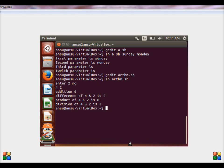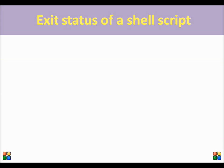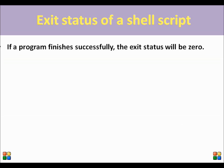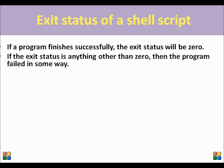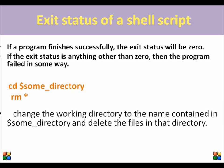Exit status in a shell script. For every program in shell scripting, it is very important to know the exit status. If the exit status is 0, that means the program has been successfully executed. If the exit status is any value other than 0, it means the program has failed. For example, the first line changes the directory to some_directory, and the second line removes all the files in some_directory. If some_directory does not exist, the command cd $some_directory will fail and the directory will not be changed. Then all the files in the current working directory will be deleted.